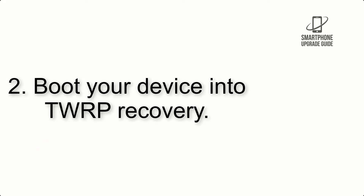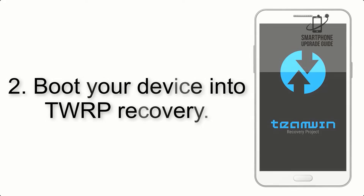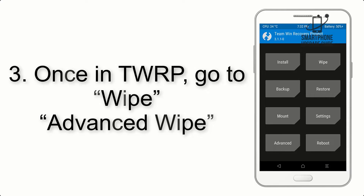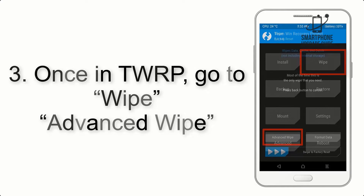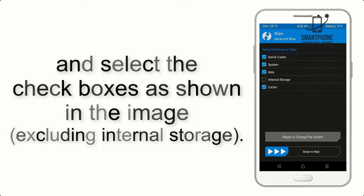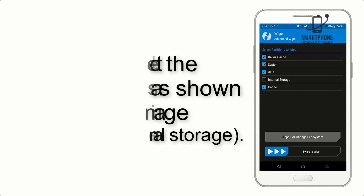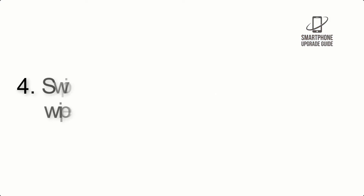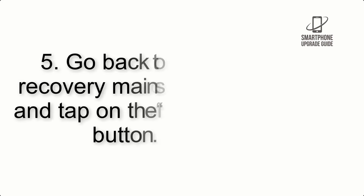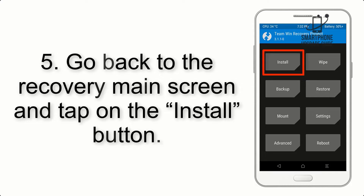Step 2: Boot your device into TWRP recovery. Once in TWRP, click on Advanced Wipe and select the checkboxes as shown in the image, excluding internal storage. Step 4: Swipe the button to wipe the device.